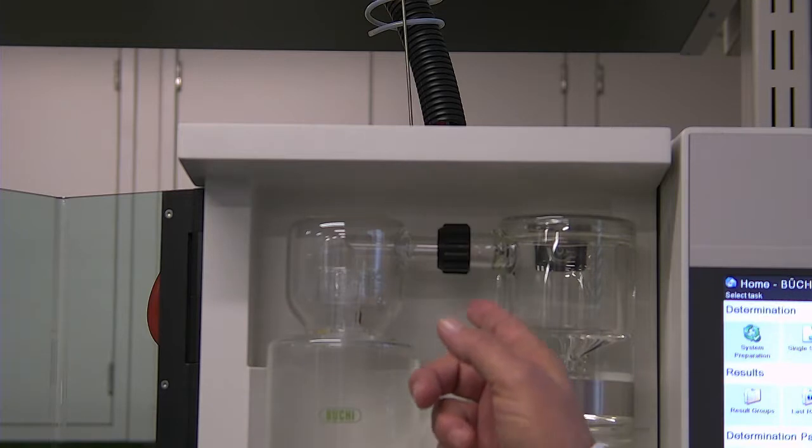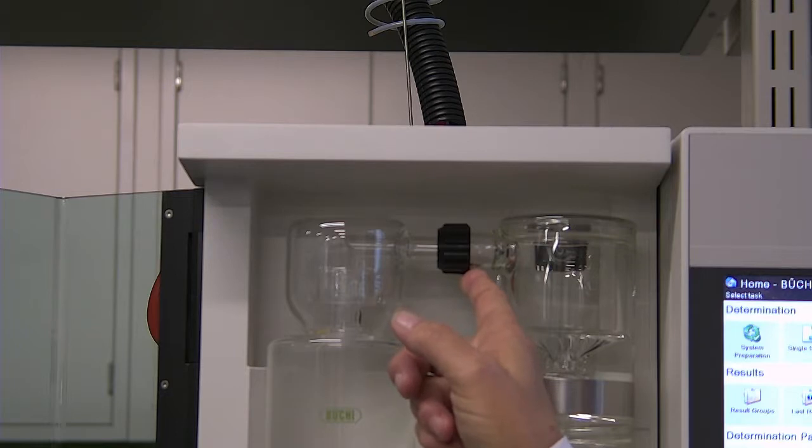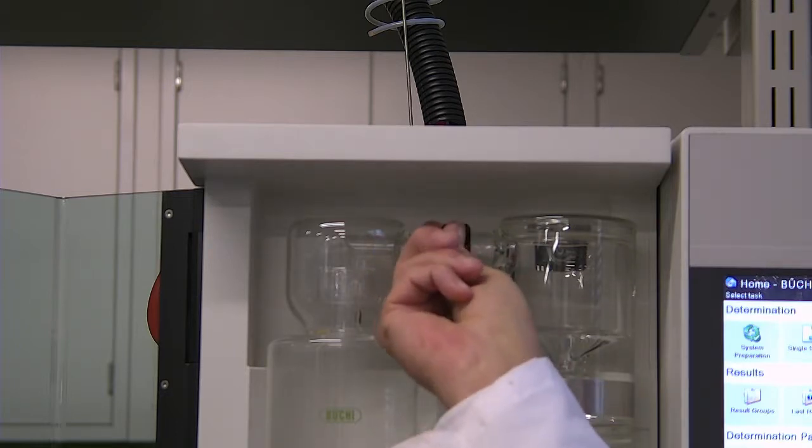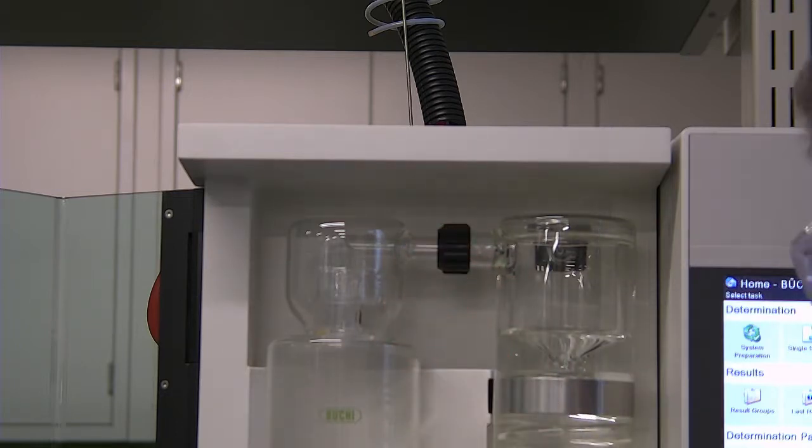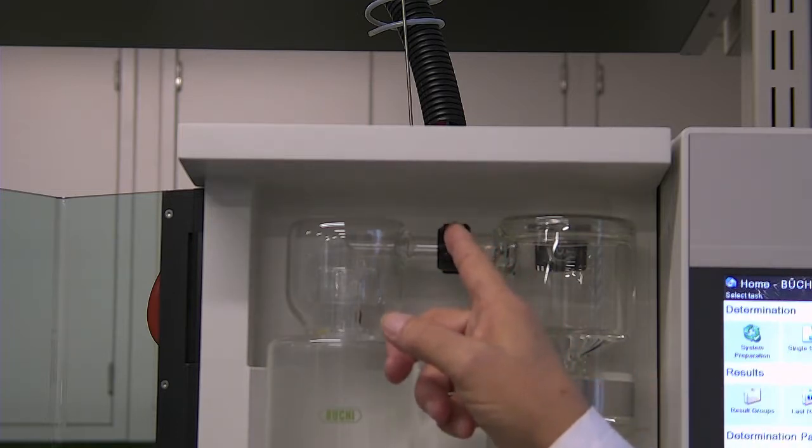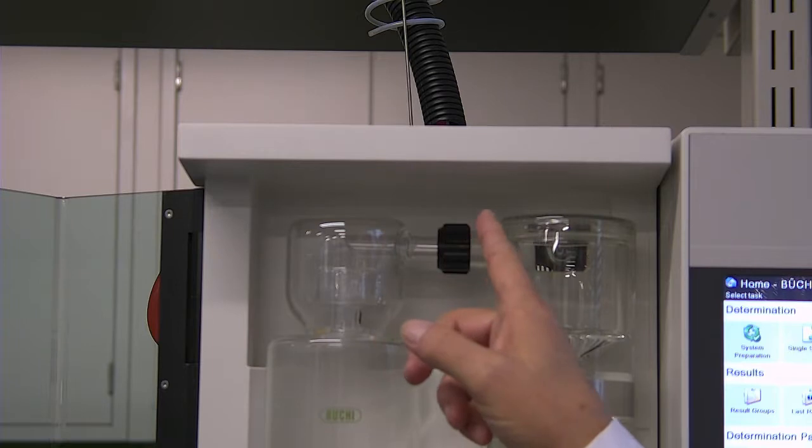If you see any drips coming off of here, you are losing nitrogen right there. Make sure that is always tight. Do not use pliers, that will only result in breaking the plastic nut or the glass.